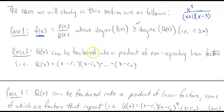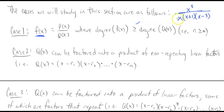We could also have a situation where, if we had another x factor in the denominator, then the degree of the denominator would be the same as the degree of the numerator, and that meets the equal-degree case.